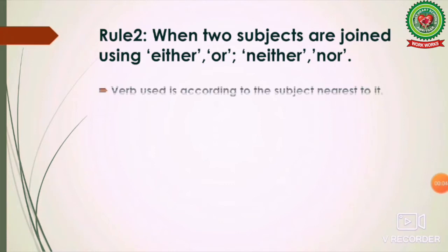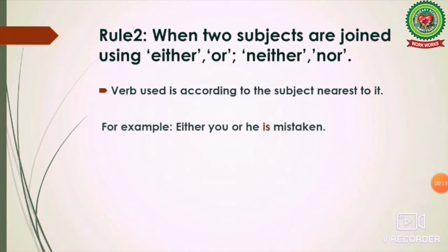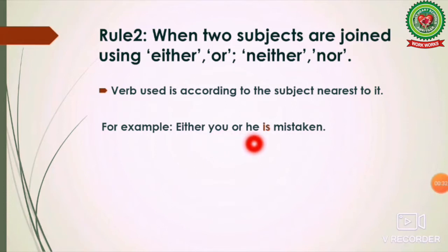The next rule: when two subjects are joined using 'either...or' or 'neither...nor,' the verb used is according to the subject nearest to it. For example: 'Either you or he is mistaken.' This sentence has two subjects — 'you' and 'he.' The verb is used according to the nearest subject, which is 'he.' Since 'he' is singular, we use 'is.'